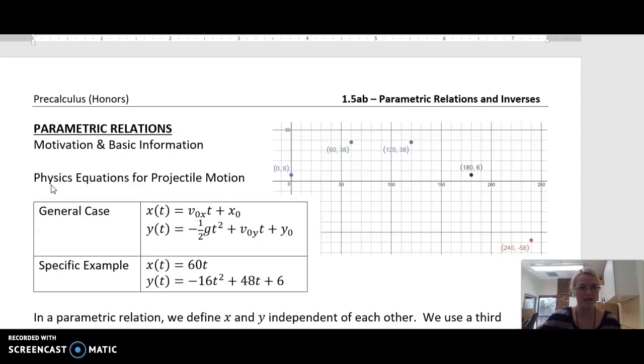It's oftentimes easier to describe how it's moving horizontally and how it's moving vertically as separate equations with respect to time. That's what we see here in physics. Physics equations for projectile motion in general: V sub zero of X, the sub zero means at time zero. Often this is called the initial velocity. V would be how fast is it going initially at time zero. X sub zero would be where it's positioned along the X axis at time zero.